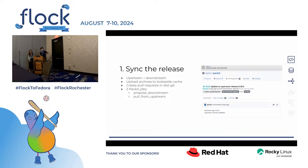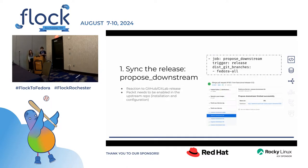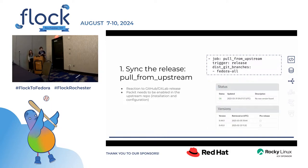The first Packit job is syncing the release and uploading to the lookaside cache. We have two ways to do this. One is a push workflow from upstream — this needs to be configured on the GitHub or GitLab side. The other is a pull workflow from downstream — you configure this in dist-git and we listen to upstream release monitoring changes. The functionality is the same: saving to the lookaside cache and opening a dist-git PR.